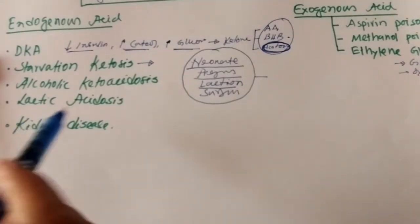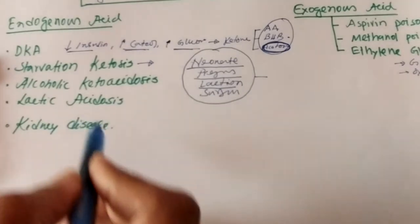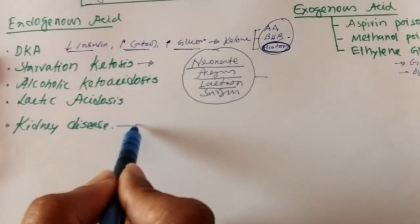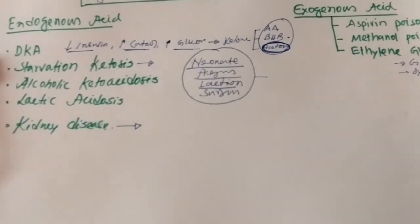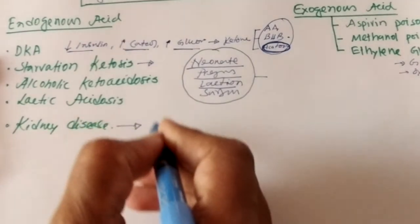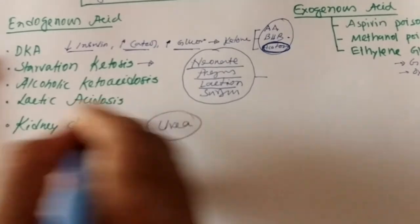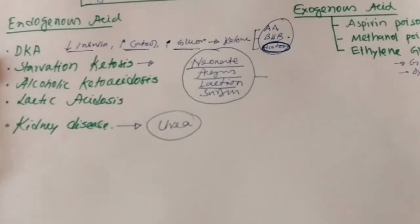Regarding kidney disease: normally, waste metabolites like urea and creatinine are excreted through the kidneys. In kidney disease, these waste metabolites cannot pass through the urine. Most importantly, urea and organic substances accumulate in the plasma, leading to high anion gap metabolic acidosis.